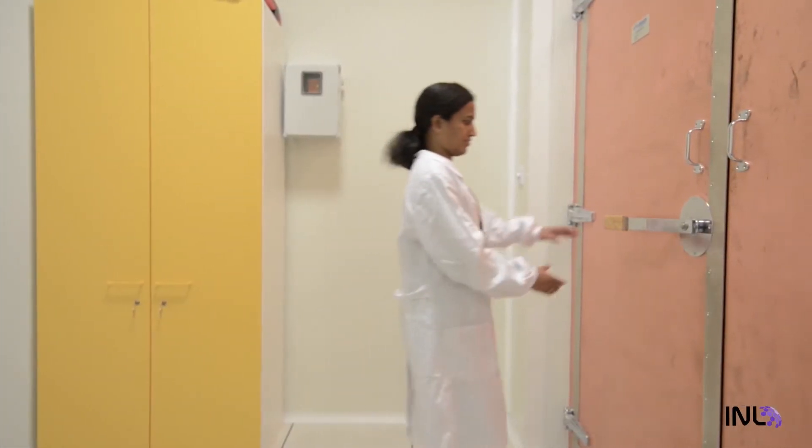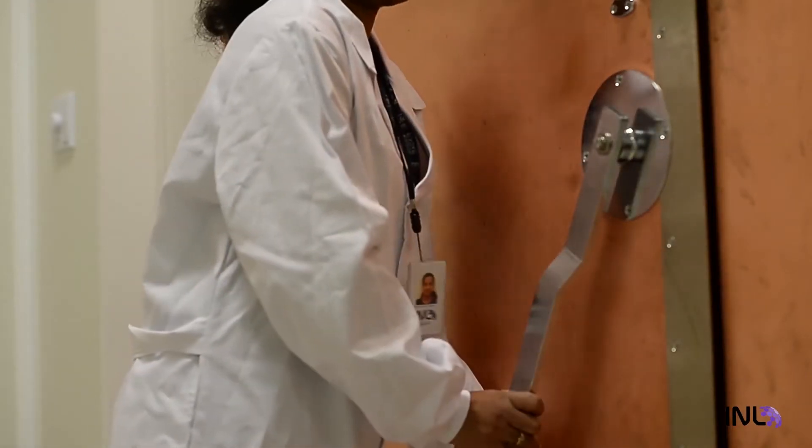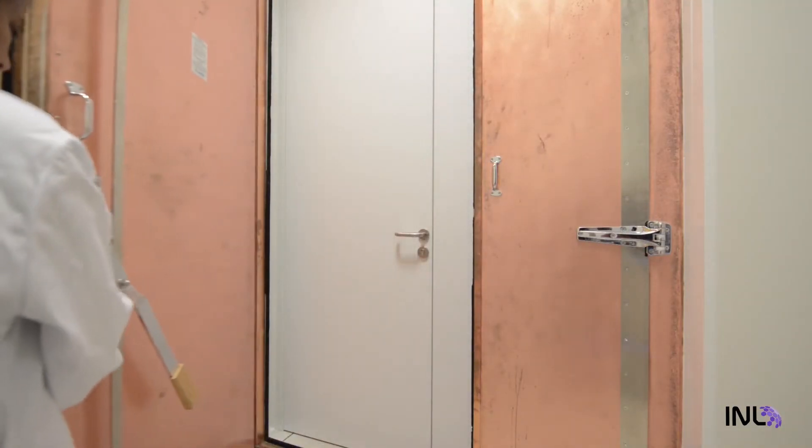Some laboratories are also protected from electric and magnetic fields by layers of metal plates on walls and doors.